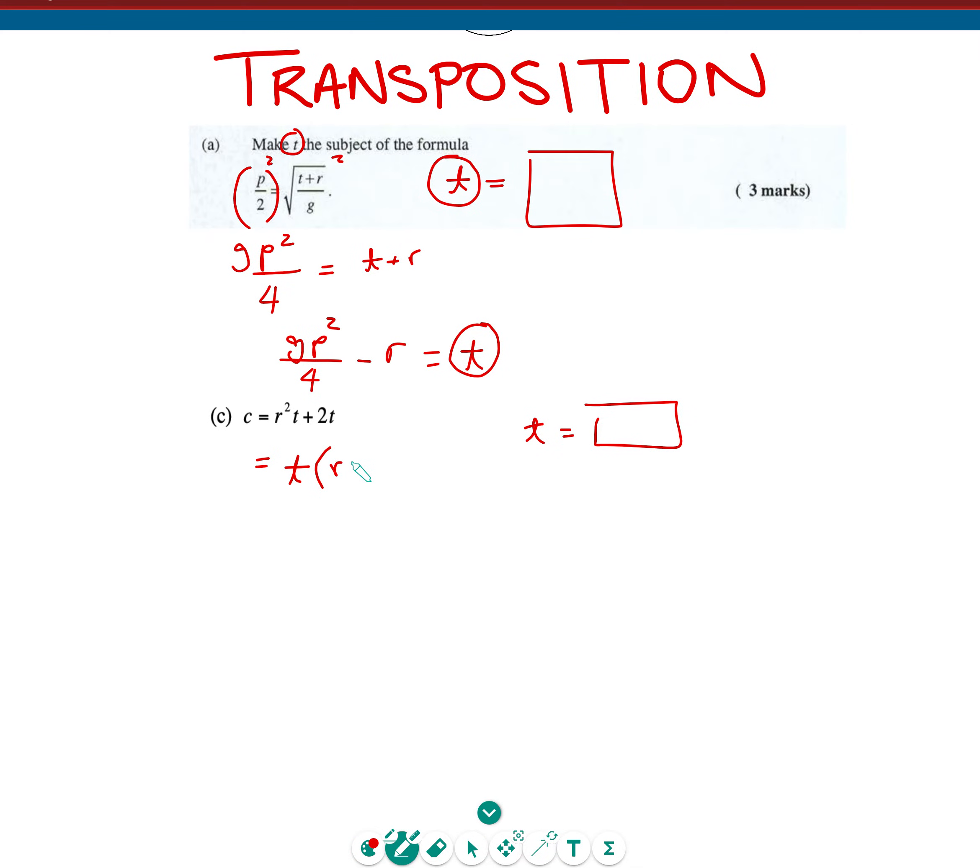The way we do that is to say, T is common to both terms, so we can write T outside of the bracket, leaving behind R squared, because T multiplied by R squared gives us back R squared T. Plus, if you factorize a T from 2T, you're left with a 2 on the inside. And that's still equal to C.